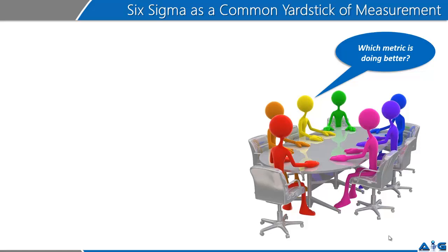Welcome back. Through my preceding videos, we started to help you understand the basic definition of what Six Sigma is. We started with the thought that Six Sigma could be understood in four-fold ways: Six Sigma as a problem-solving methodology, as a common yardstick of measurement of business processes, as a philosophy, and as a management system. Let's get to the next item — Six Sigma as a common yardstick of measurement of business processes.